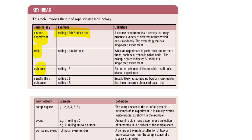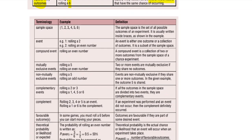An outcome is one of the possible results of your experiment. When you roll a dice, rolling a five is one of the outcomes you could get. Equally likely outcomes means there are two or more results that have the same chance of occurring — on a dice, a five and a six both have the same chance, and on a coin, a head and a tail have the same chance.